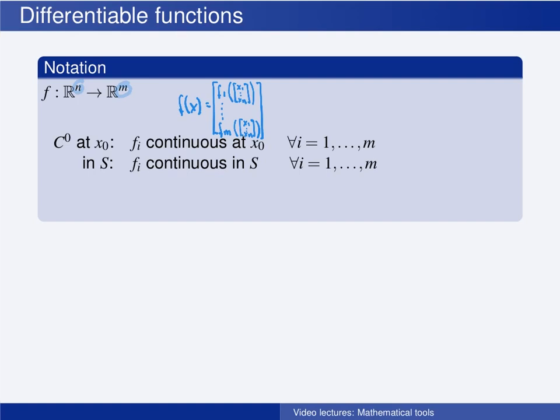If each of these elements, the fi's, are continuous functions at some point, let's call this x0, we say that the vector function f is continuous at this point. And for short, we write this as the vector function being C^0 at this point.